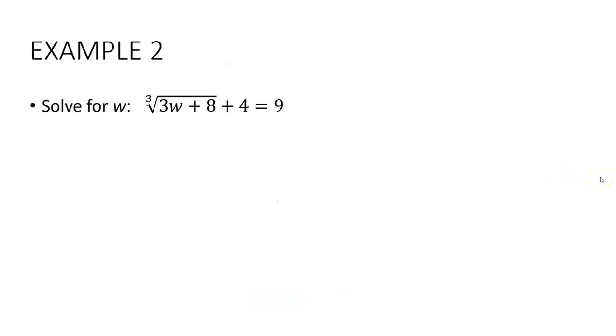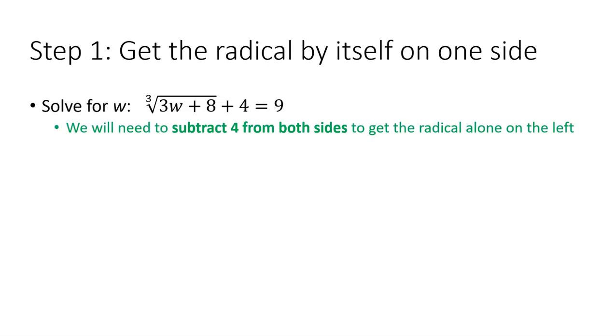Here's another example. The cube root of all of 3w plus 8, take that plus 4 to equal 9. Our first step is to get the radical by itself on one side, and we have a move to make here. We need to subtract 4 from both sides to make that happen.